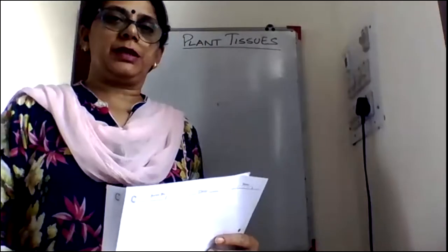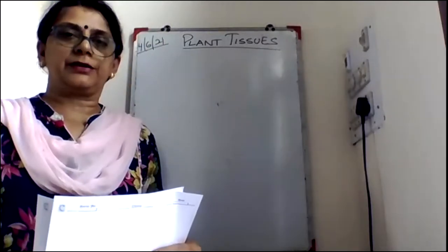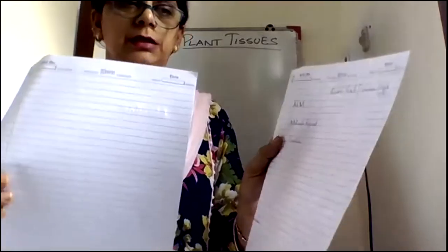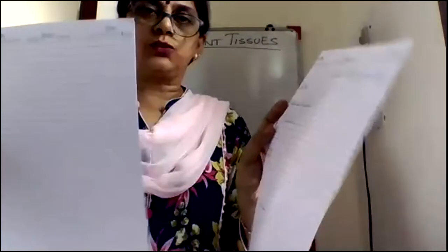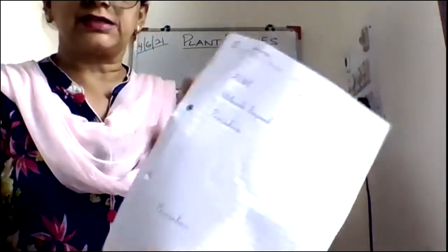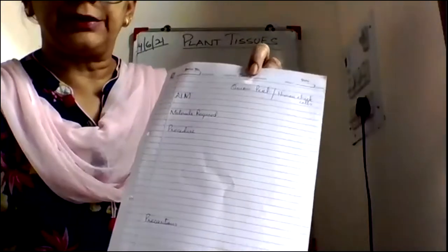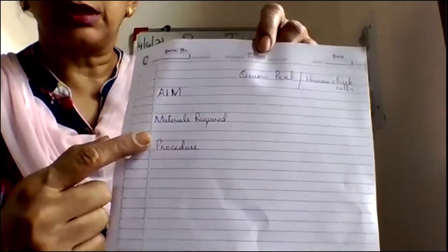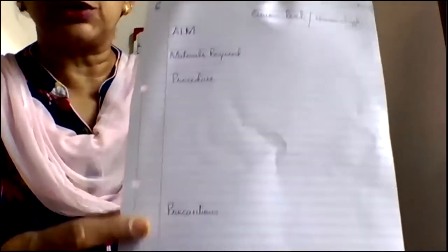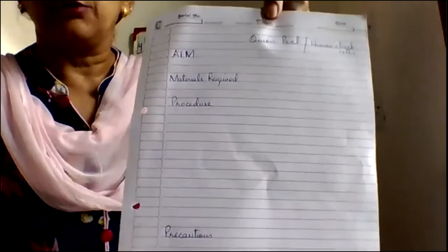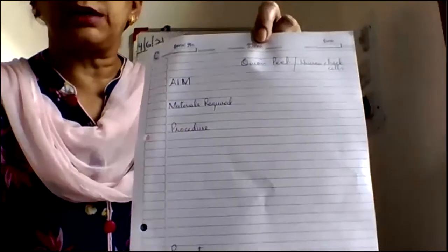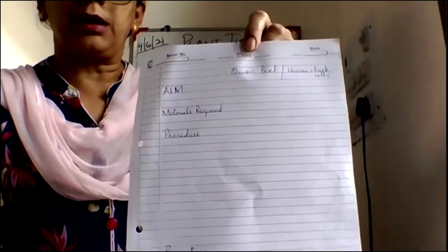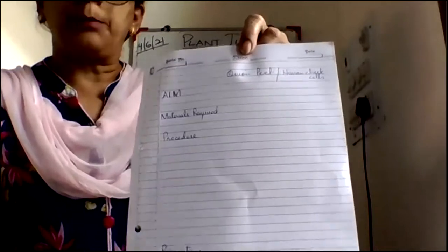Students, first let me tell you how to write down your practical activity. In the sheets, you have to take the whole bundle and take two such sheets. On the ruled side, you have to first write down the aim, then the materials required, then the procedure, and then the precautions for the experiment we had done in biology — to prepare a temporary mount of onion peel and human cheek cell.